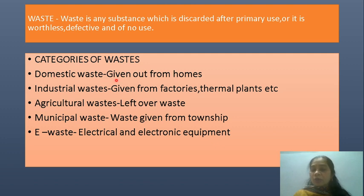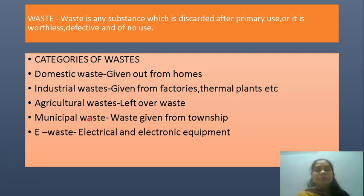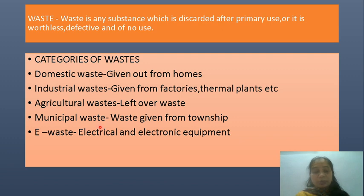The first one is domestic waste, which is given out from our homes — it can be the kitchen waste or waste from our washrooms. Then industrial waste, given out from factories and thermal power plants. Then we have agricultural waste, which is generated after obtaining food grains — whatever waste parts of the plant like the stem, leaves, and roots become the waste. Then we have municipal waste, which can be waste coming from public places like hospitals, public toilets, schools, offices, and railway stations.